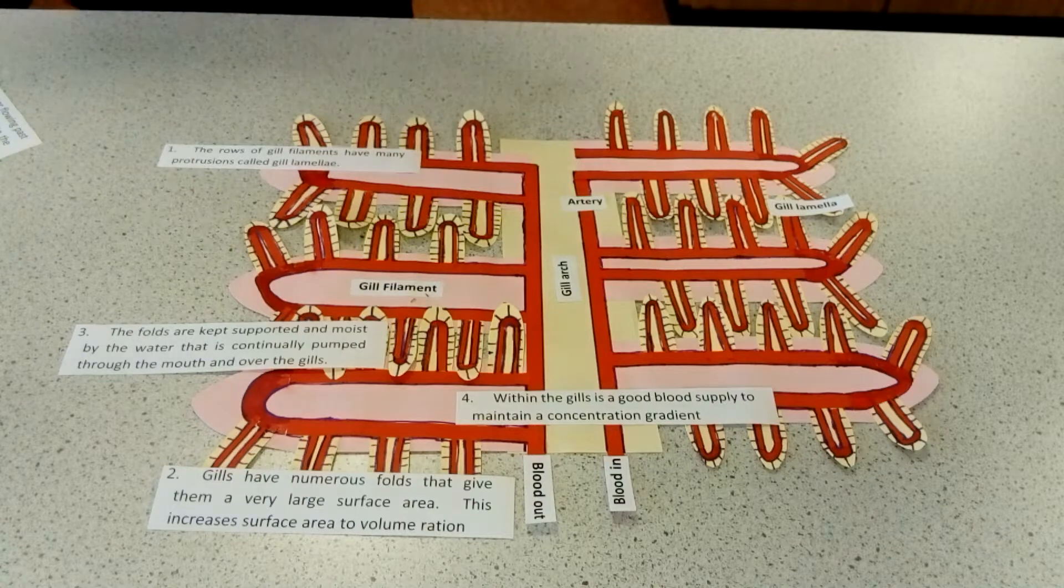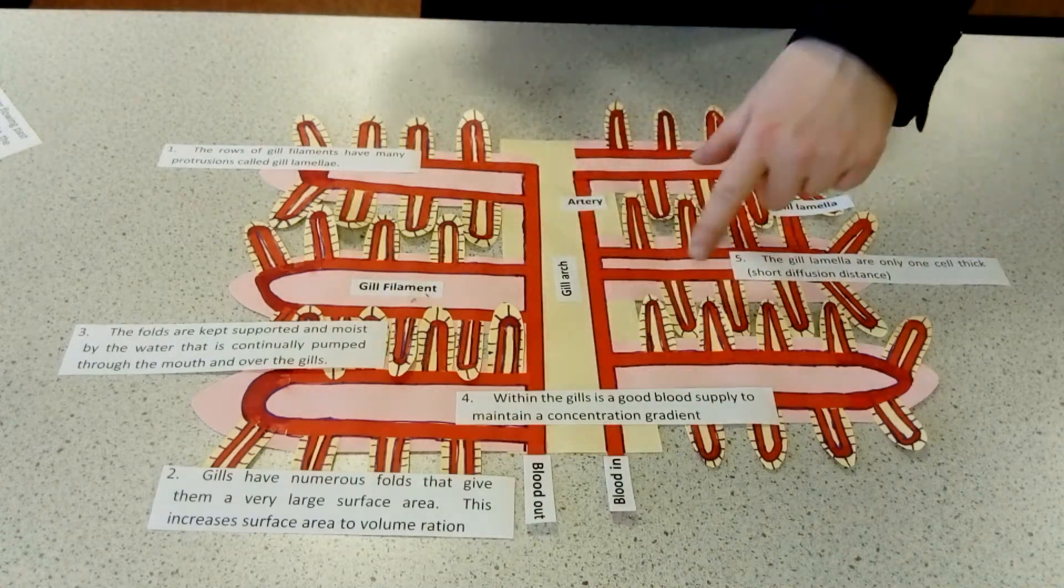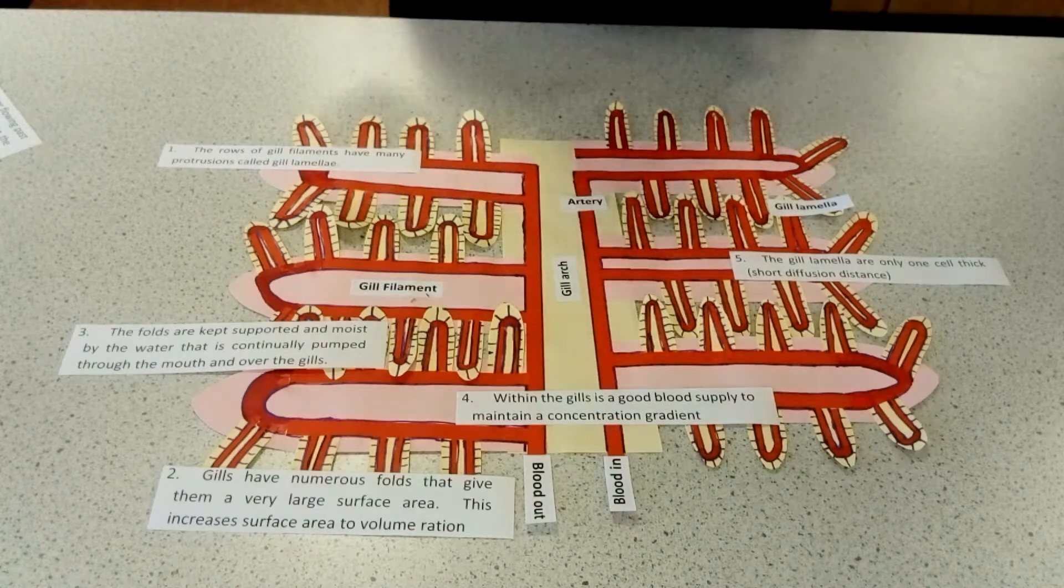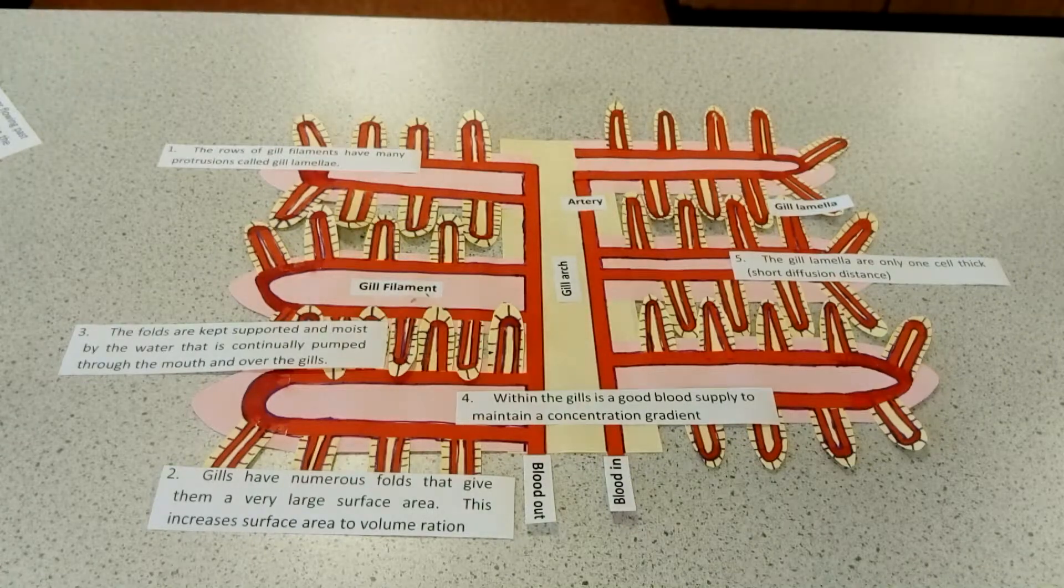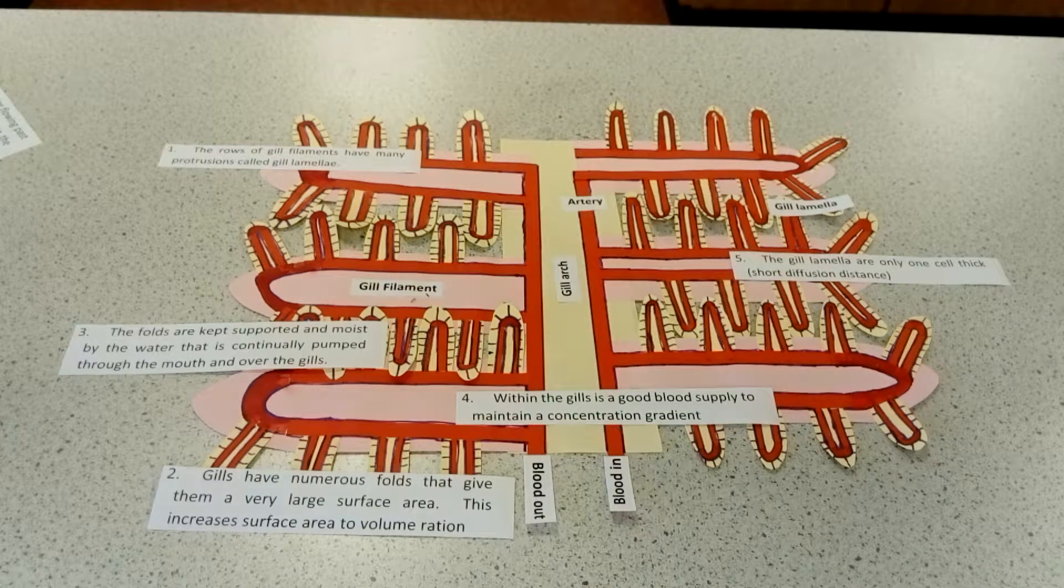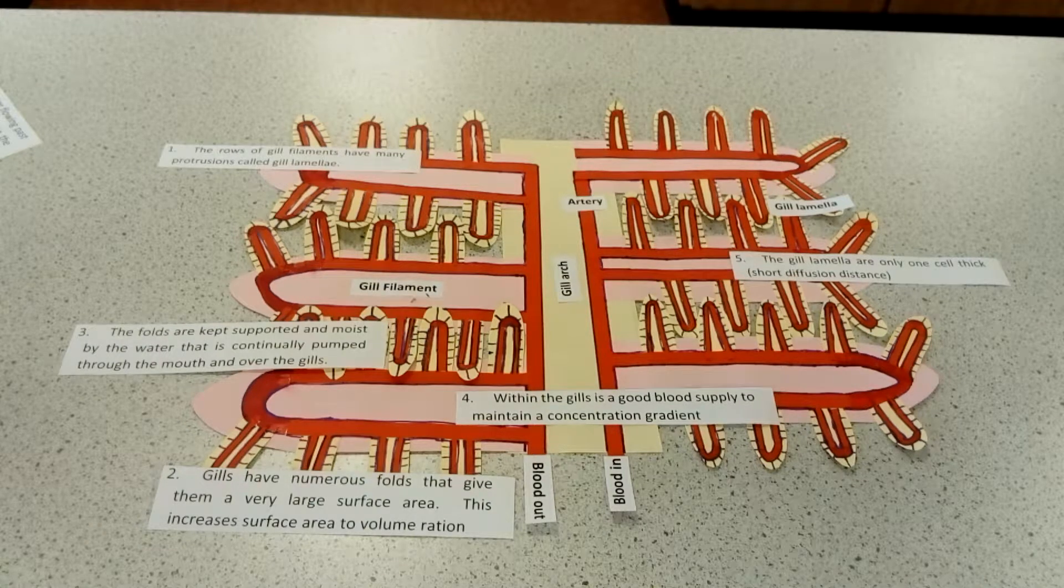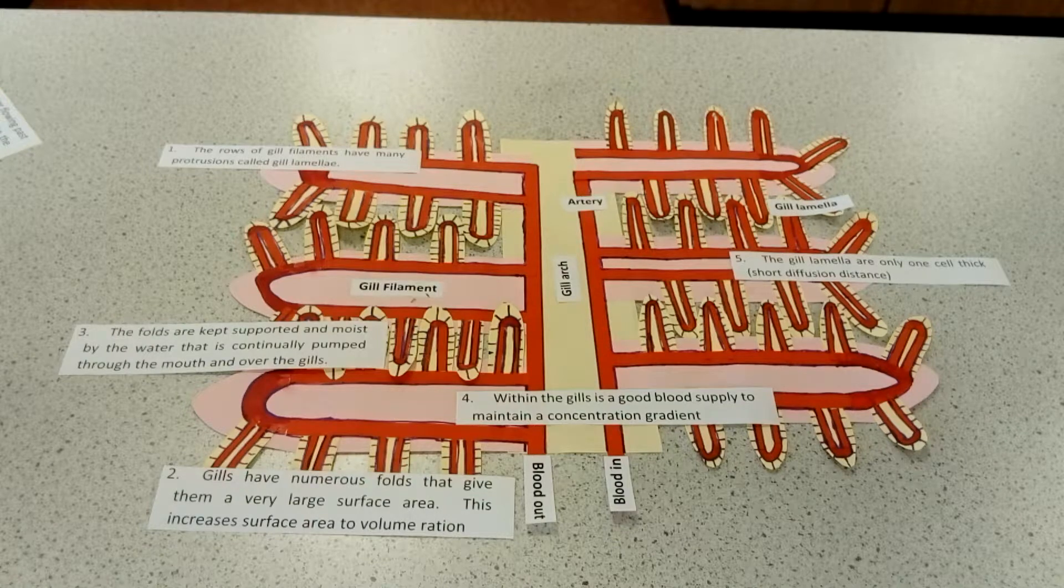Something else is that we can see here that the gill lamella, the outside is only really one cell thick. So that means that there is a relatively short diffusion distance. Remember, whenever we're referring to diffusion, always talk about short diffusion distances as increasing the rate of diffusion.